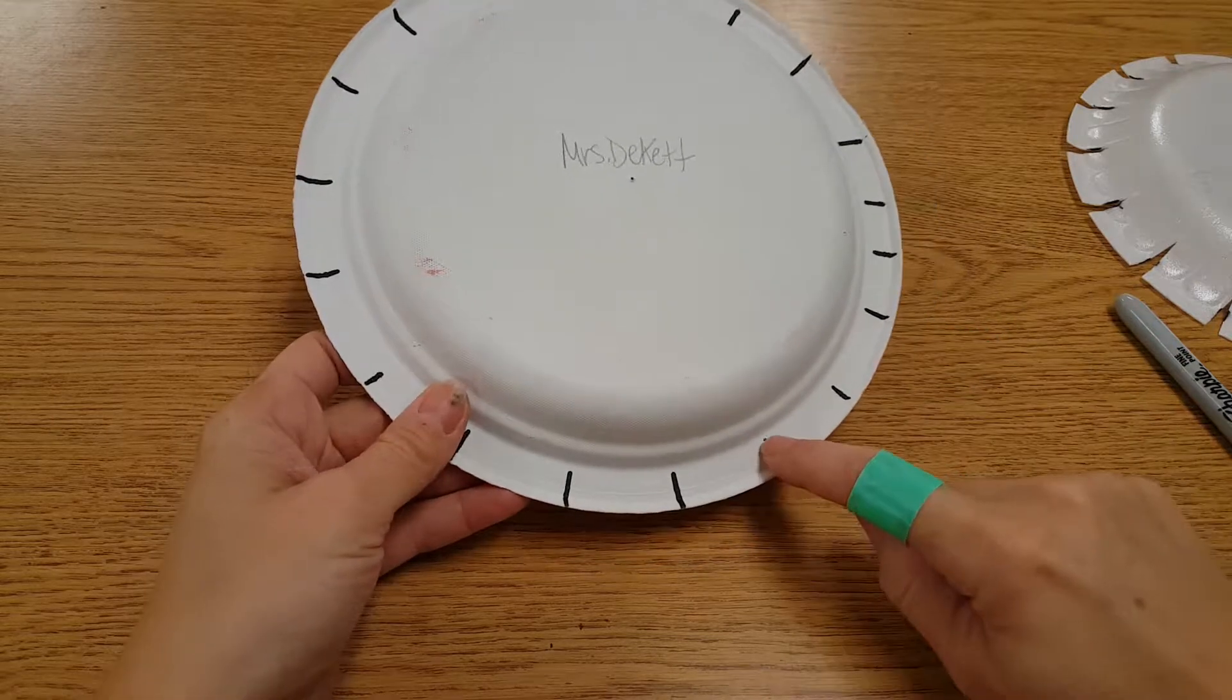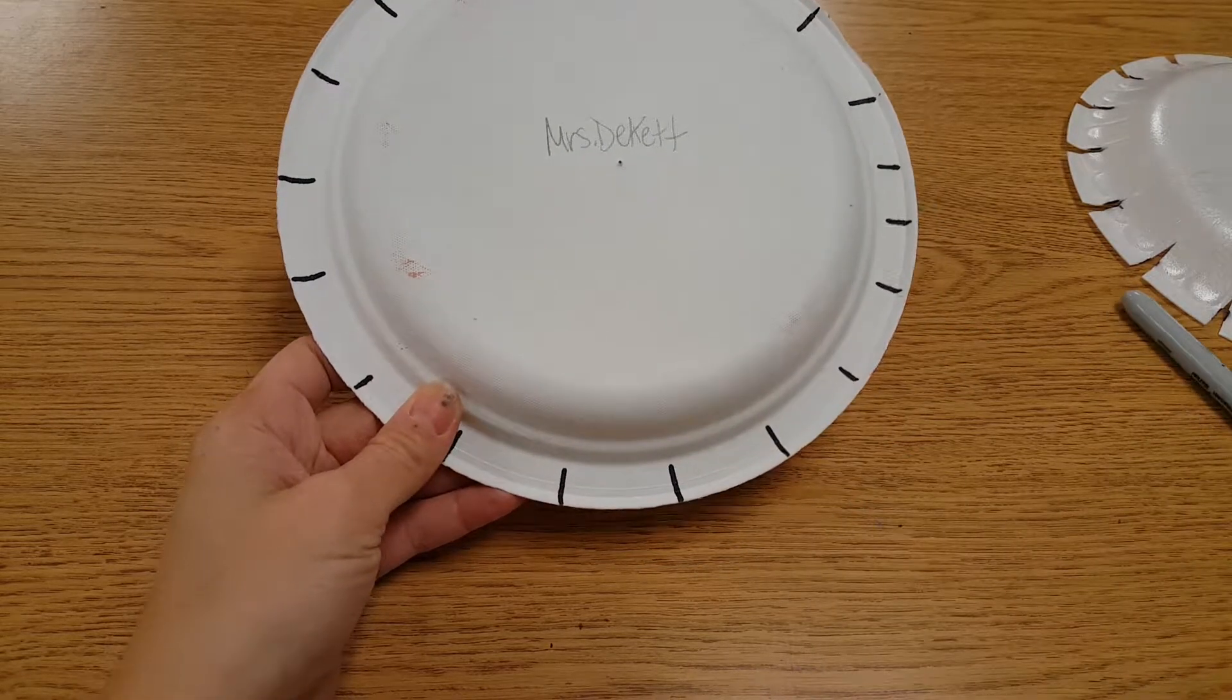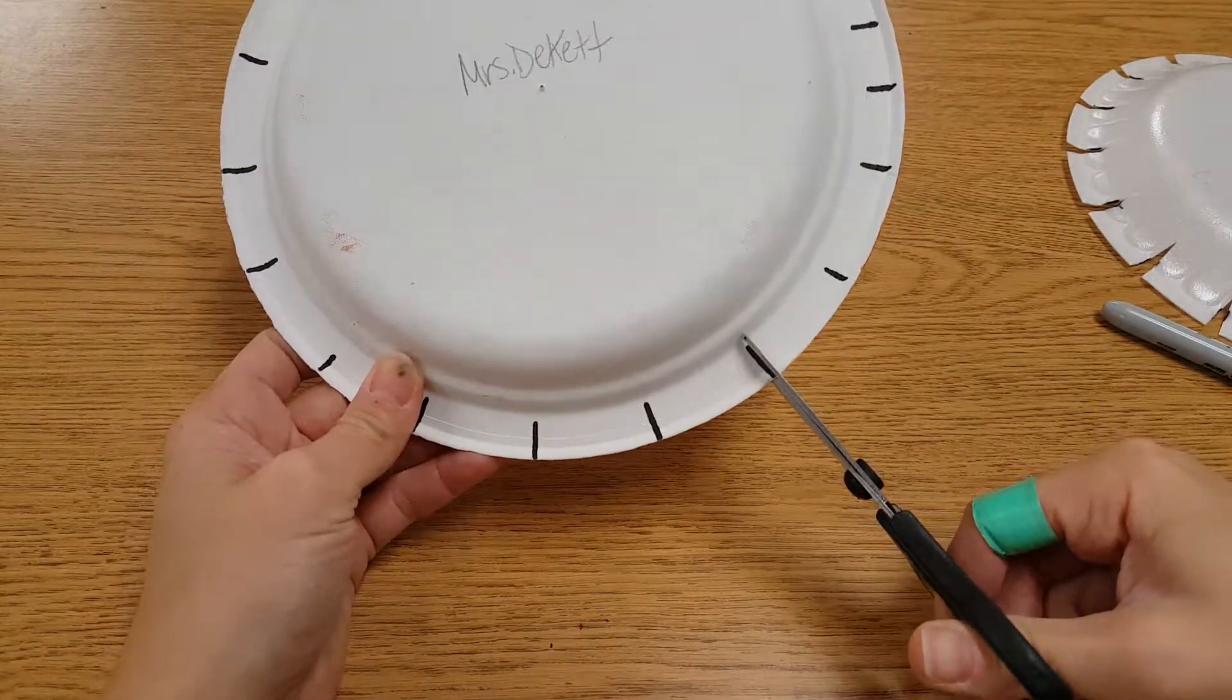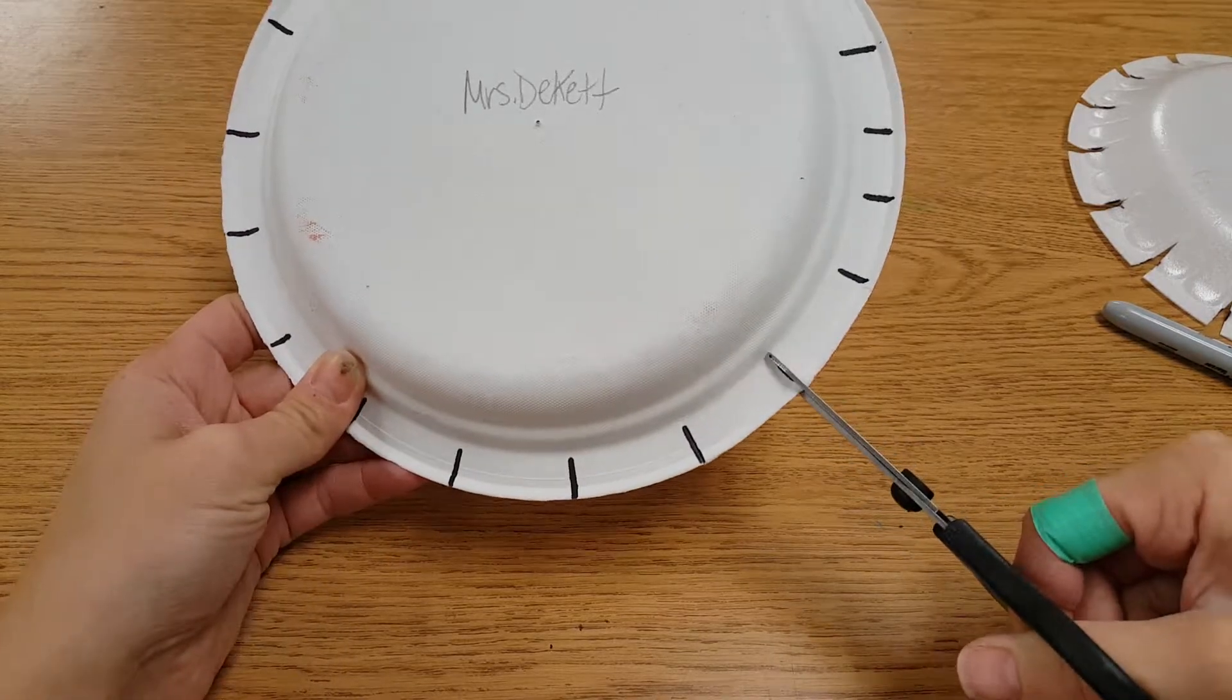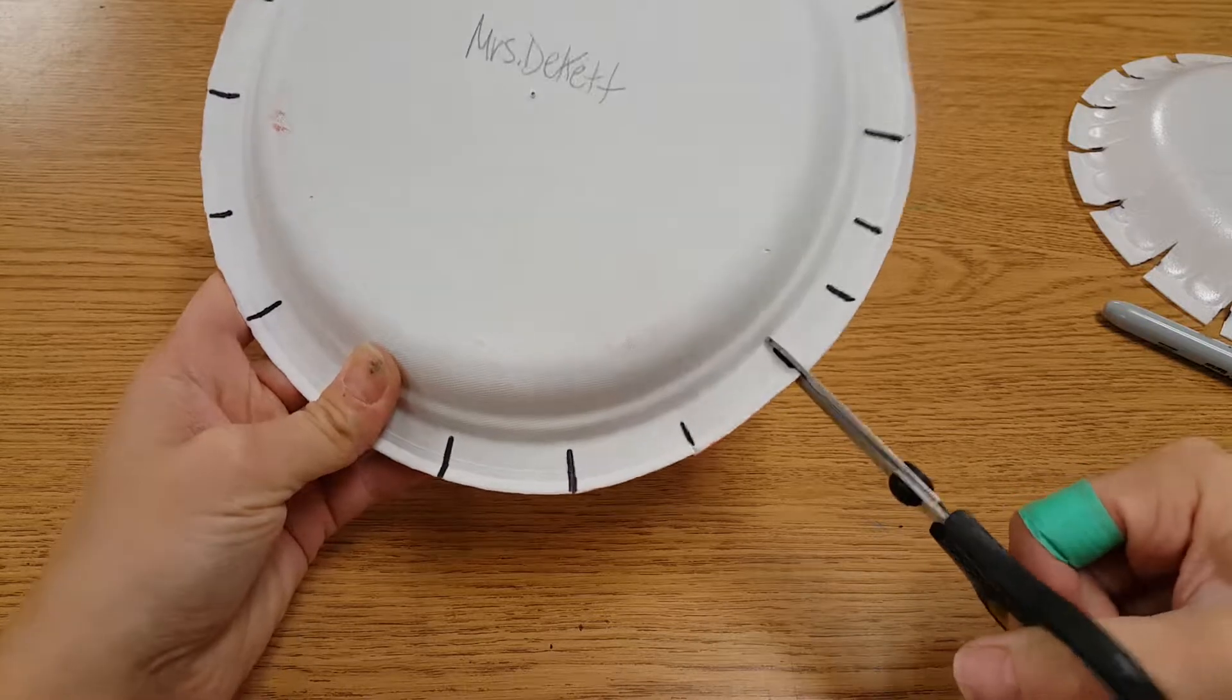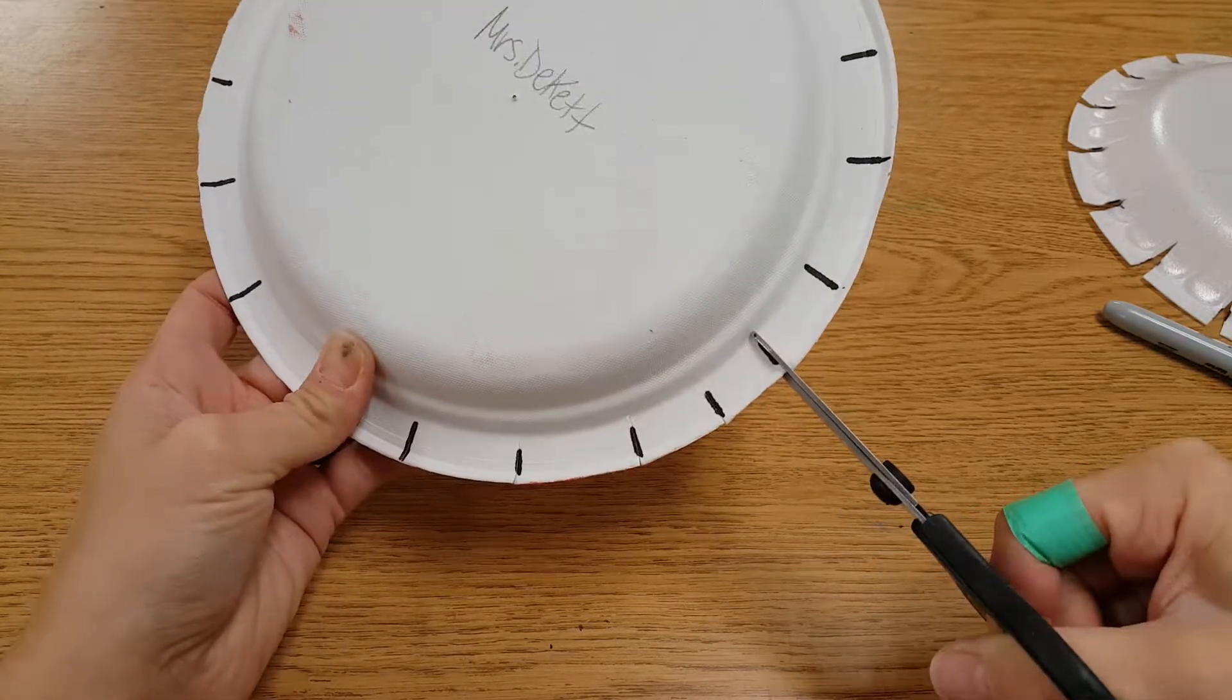When you cut your notches, you don't want to go past that first lip. So aim for your best to stay exactly on those marks that you made and don't cut past that very first lip. So you're going to have 19 notches in your loom for your weaving.